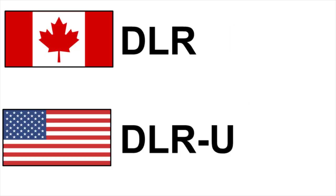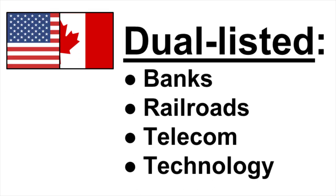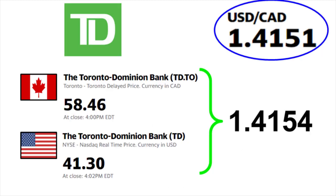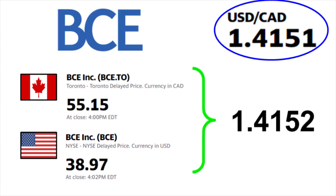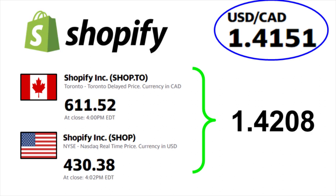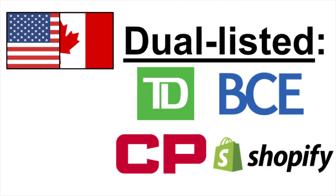Besides using DLR, there are also many big Canadian companies domiciled in both Canadian and US stock markets that you can use for Norbert Gambit. Some examples are Canadian banks, railroads, telecom companies, and tech companies. The only risk from using these companies is daily price fluctuations since stocks tend to move on business news. For example: TD gives a conversion of 1.4154, very close to the actual rate of 1.4151. CP comes in at 1.4188, slightly higher. BCE at 1.4152, essentially the same as the actual rate. And Shopify at 1.4208. Although the currency exchange isn't exact, it's still extremely close and much better than converting through a normal foreign exchange platform.